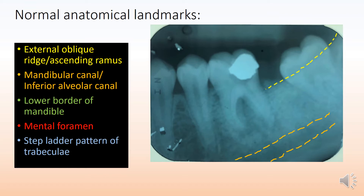The lower border of the mandibular canal — you don't see it always in all radiographs — but depending on the angulation of the way the radiograph was taken, you can see it here indicated by the green line. This is followed by the mental foramen, a faint radiolucency generally seen between the premolar roots, pointed out here by the red dotted line.